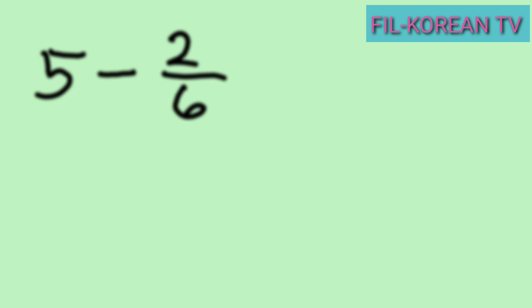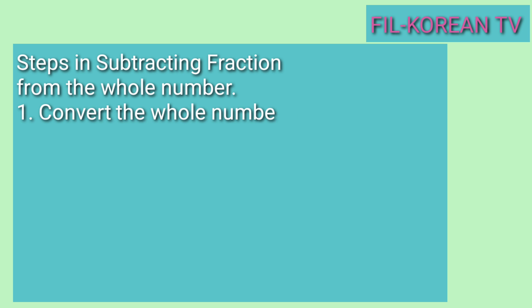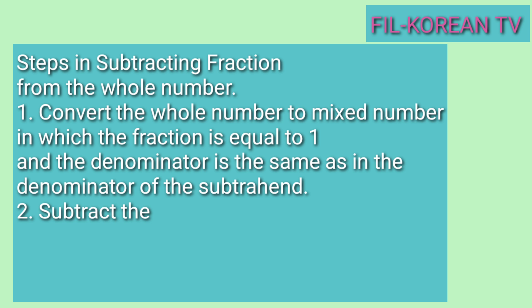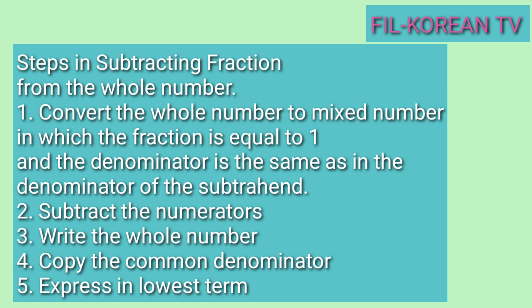Let's start with this problem: 5 minus 2 sixths equals. To solve this, let's follow the steps in subtracting fraction from the whole number. First, convert the whole number to mixed number in which the fraction is equal to 1 and the denominator is the same as in the denominator of the subtrahend.